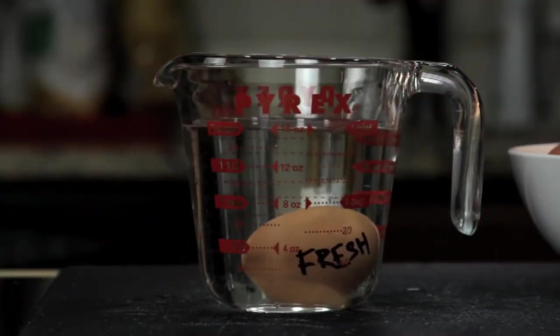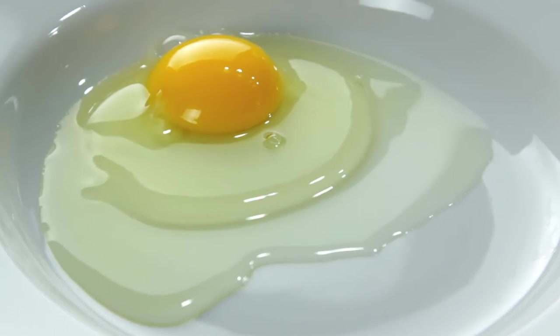Once you've got your fresh egg, the second tool you need is something that I saw first suggested by British chef Heston Blumenthal, a fine mesh strainer. You see, no matter how fresh your eggs are, there's always going to be some amount of liquid white. It's this excess white that causes misshapen eggs.